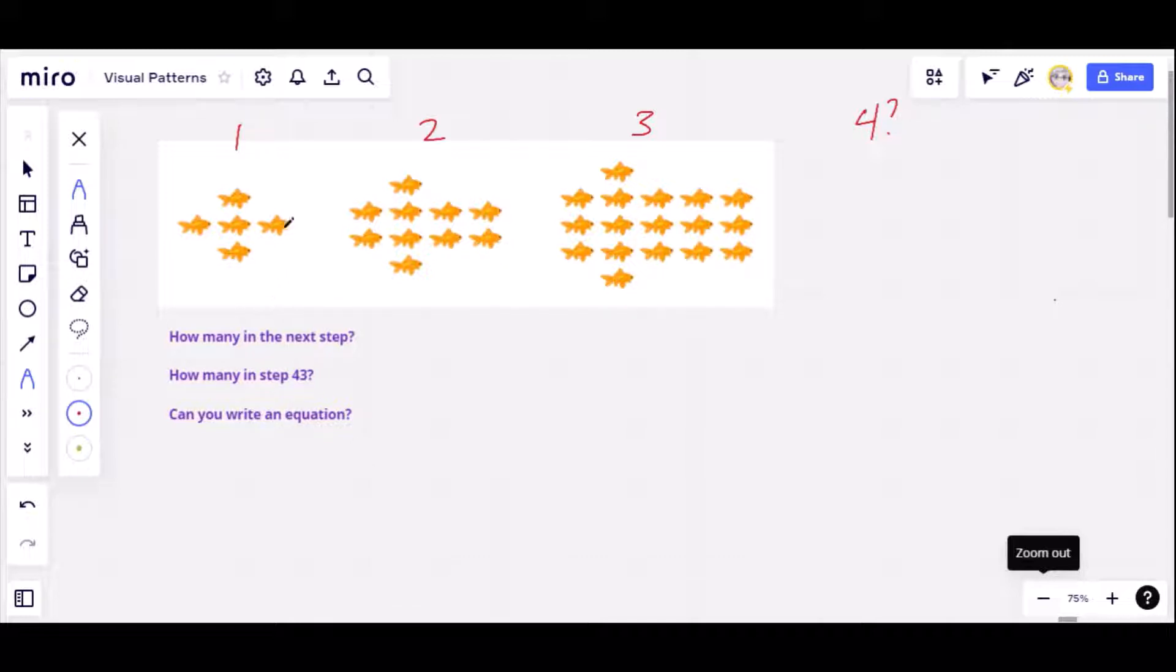All right, so the first thing I noticed just looking at this pattern is that it seems to get bigger pretty quickly. So we've got five here, and then here we're up to ten already, so it doubled between steps one and two. And here, did it double again? Let's see, 15, 16, 17. So it hasn't quite doubled again. So I'm not sure exactly what's going on. At first glance, an equation doesn't pop out at me.